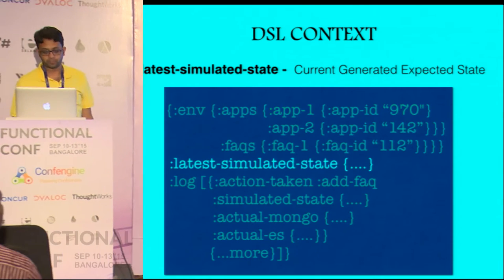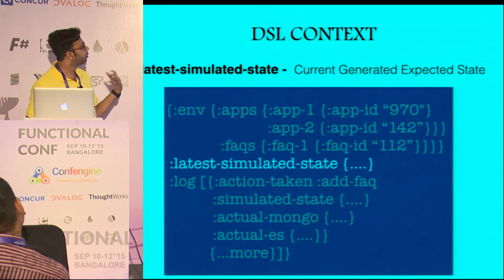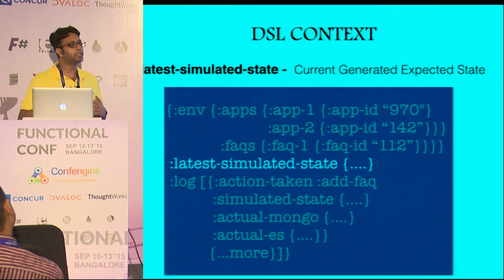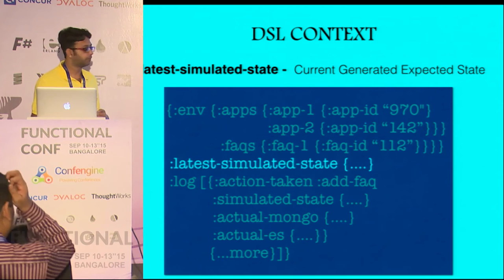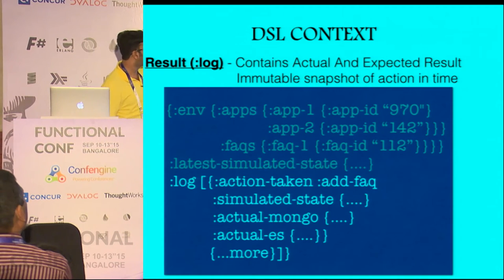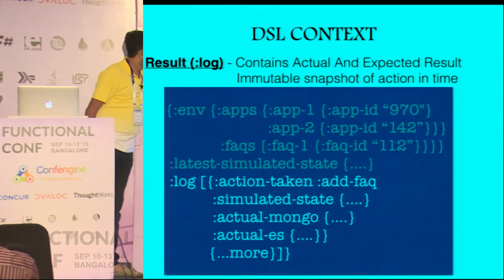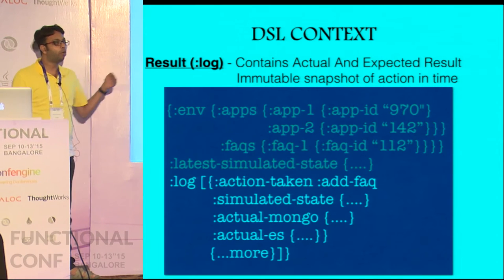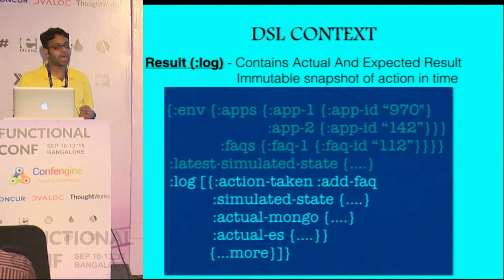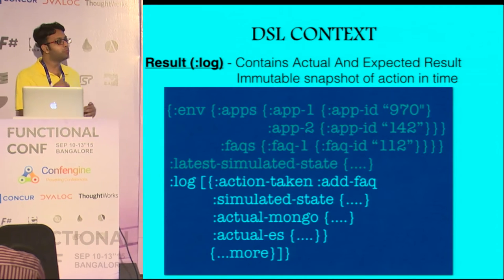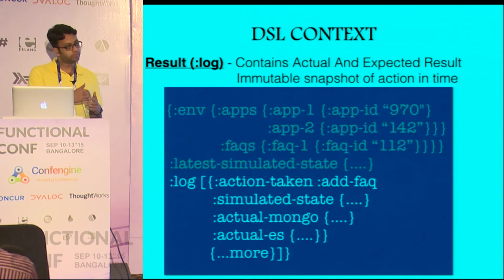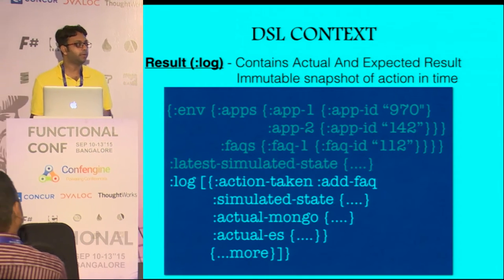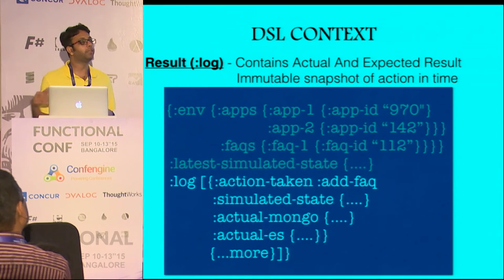The second part is latest simulated state — after each action, what is the current expected state of the system from my understanding? And then there is a log — after each action taken, I want to log what happened for that action. So if I added an FAQ, what was the simulated state at that point in time, what was the actual state of Elasticsearch, Mongo, whatever, and so on. You keep adding to that log history after each action.